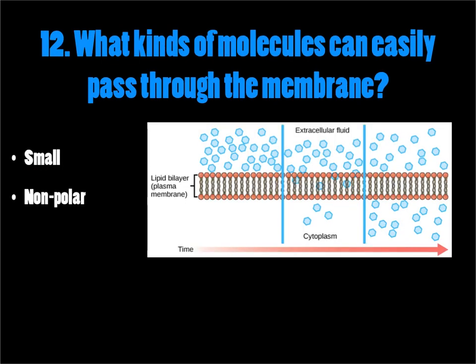What kinds of molecules can easily pass through the cell membrane? The first would be small and nonpolar molecules. Small nonpolar molecules can slip right through between the phospholipid molecules and enter the cell. If they were charged, they'd get stuck to or repelled by the polar head on the outside. If they were polar, they'd be repelled by the nonpolar fatty acid tails in the middle. Since nonpolar molecules want to associate with the nonpolar tails, and since they're small, they fit right through.